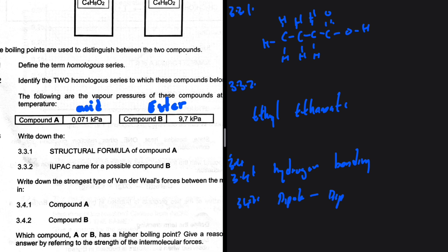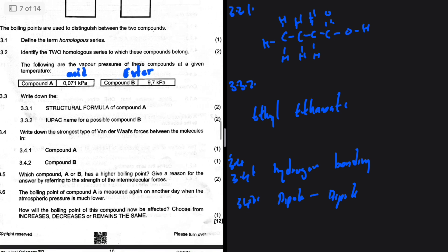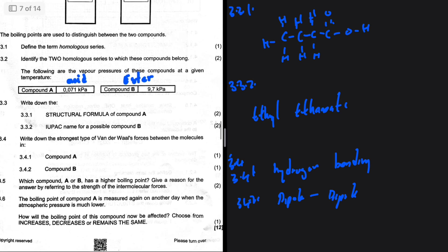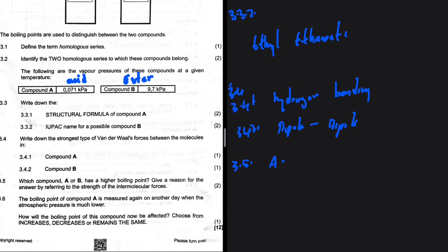3.5 Which compound, A or B, has a higher boiling point? Give a reason for the answer by referring to the strength of the intermolecular forces. So between A and B, A has a higher boiling point. It has stronger intermolecular forces: hydrogen bonding, which is greater than the dipole-dipole in compound B.